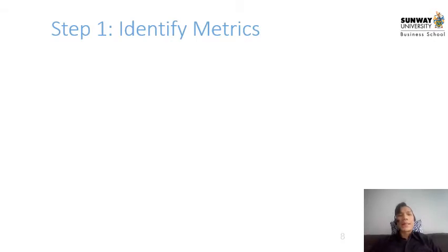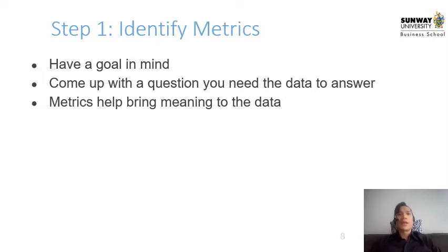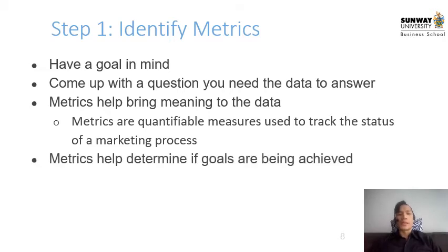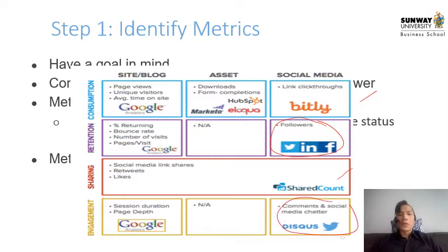Let's begin by identifying our metrics. Always start with a goal in mind and allow yourself to come up with questions that the data needs to answer. Metrics bring meaning to the data, giving us answers to what we're trying to find out. Metrics are quantifiable measures used to track the status of a marketing process and can help determine if goals are being achieved. We can find out what people are consuming, retaining, sharing, and engaging with — whether positive, negative, or neutral — through social media analytics.